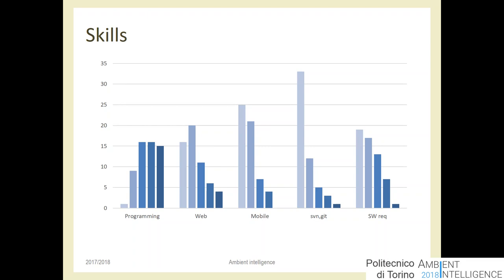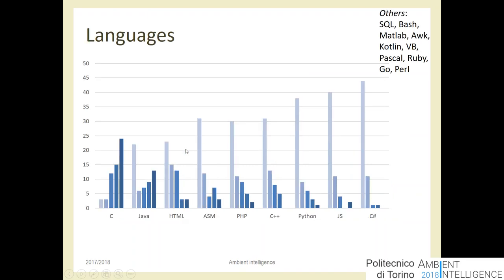Web technologies are something people start learning by themselves since they aren't formally taught in any course, and the others are also not things you typically do on your own — and it shows. The survey on programming languages shows a similar pattern: sorted from most to least known by average score, nearly everyone is confident with C. Java shows a bimodal distribution — those who took the Java course in computer science and those from electronics who only know C.